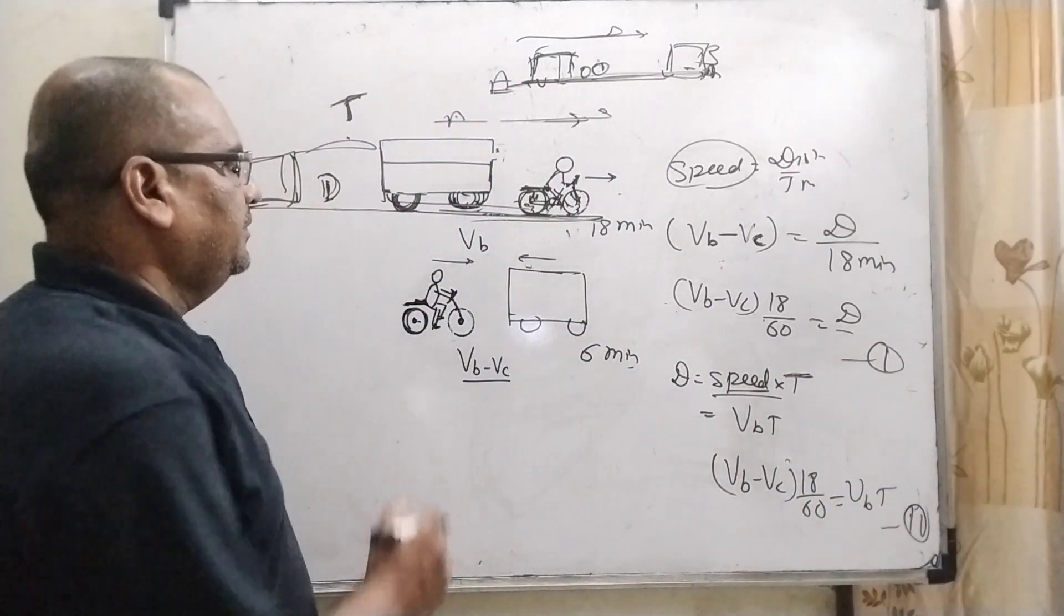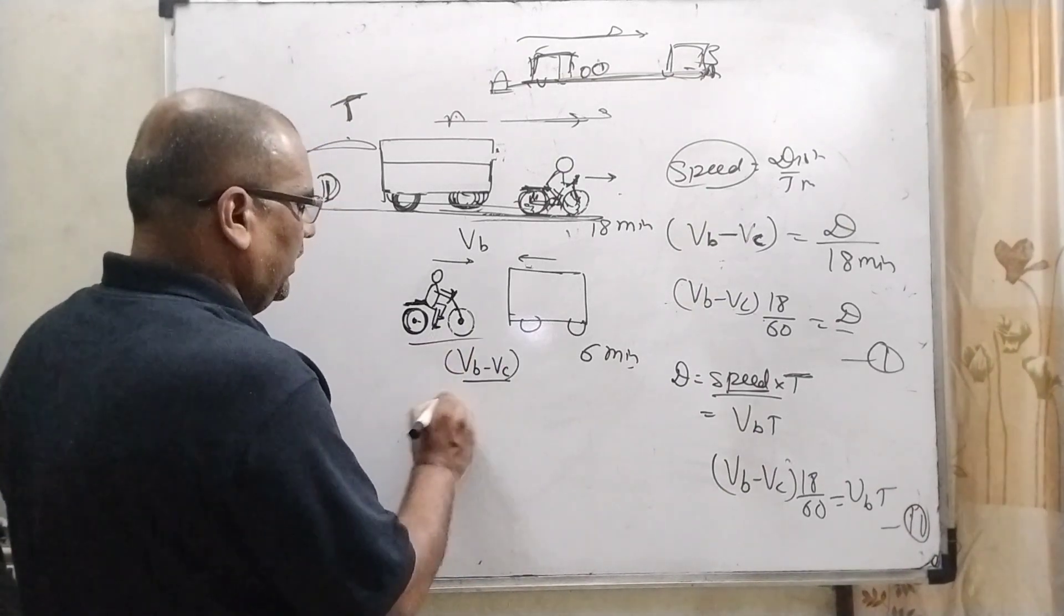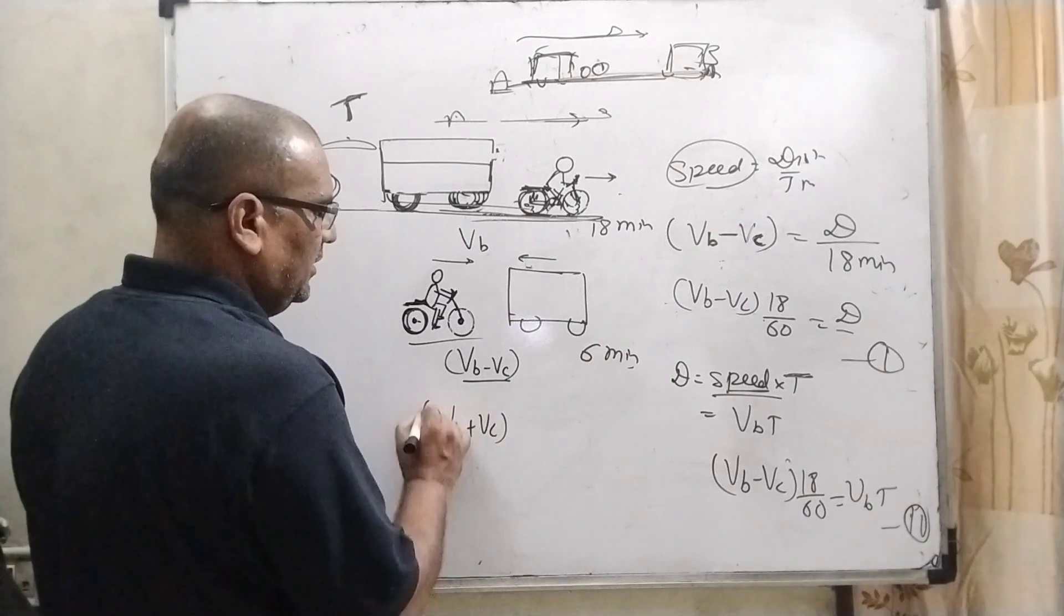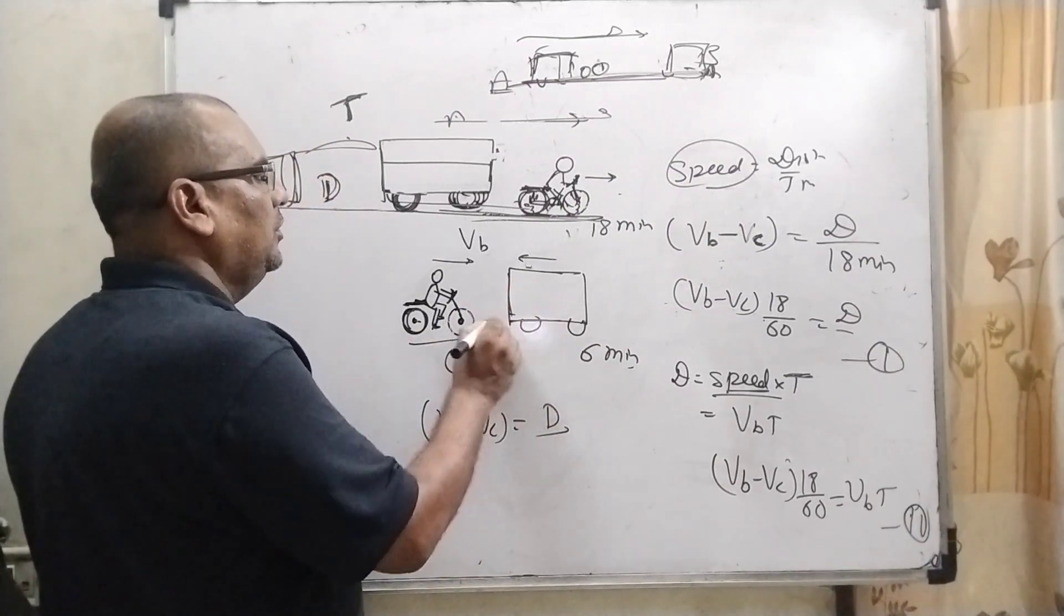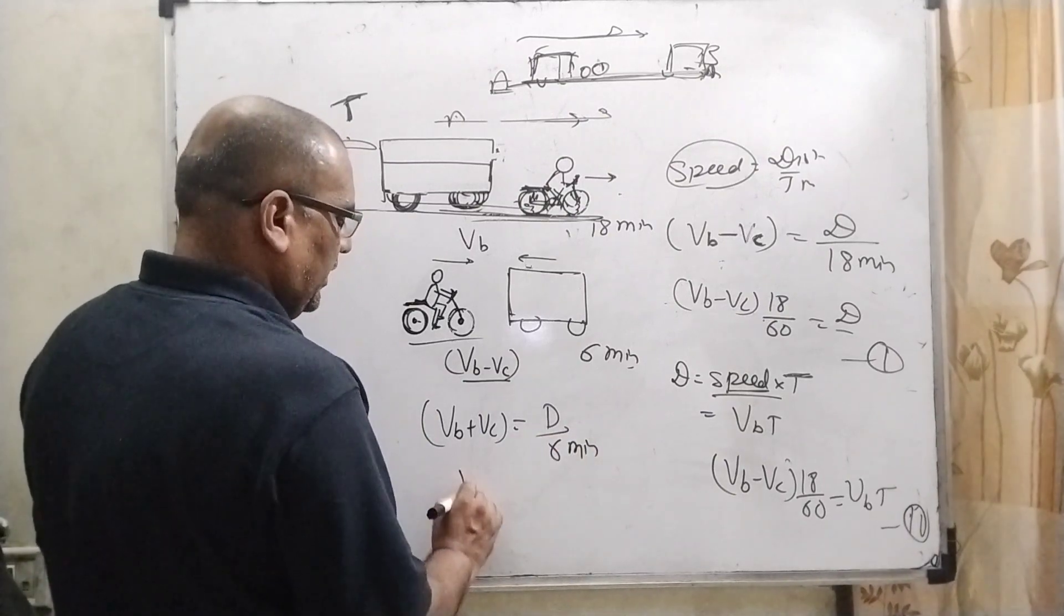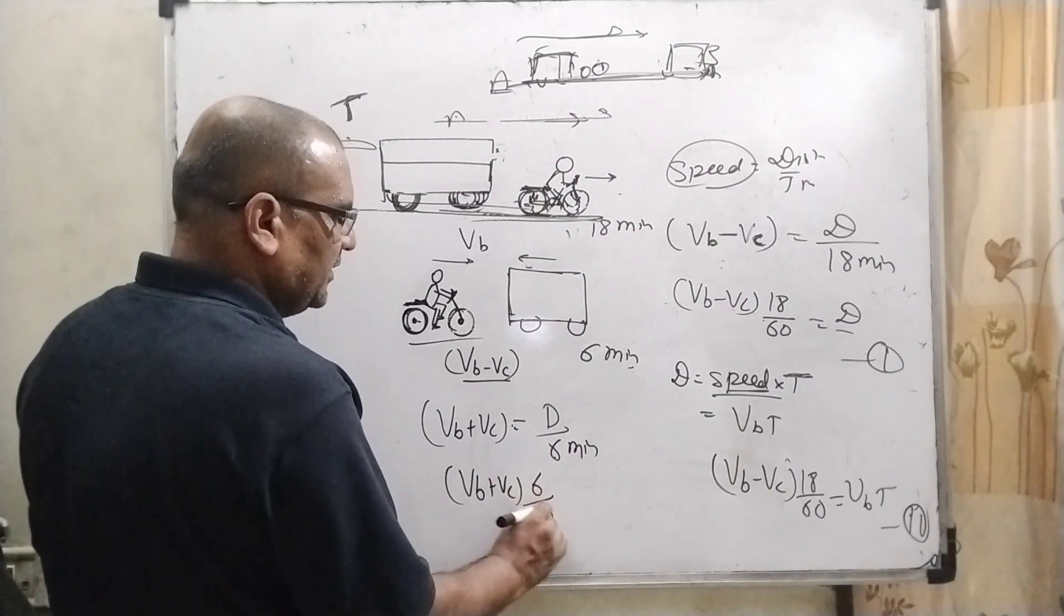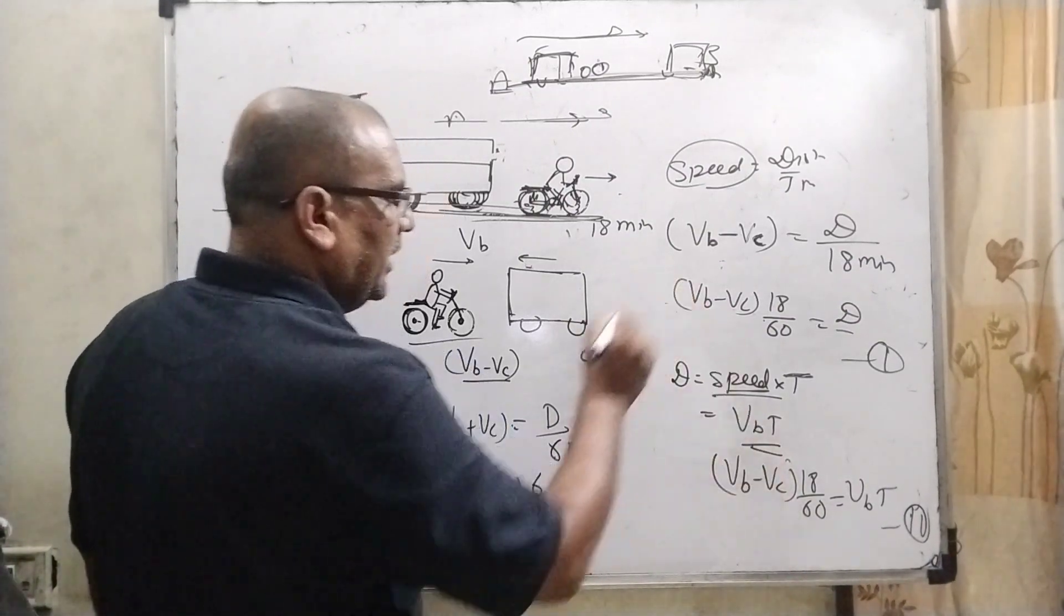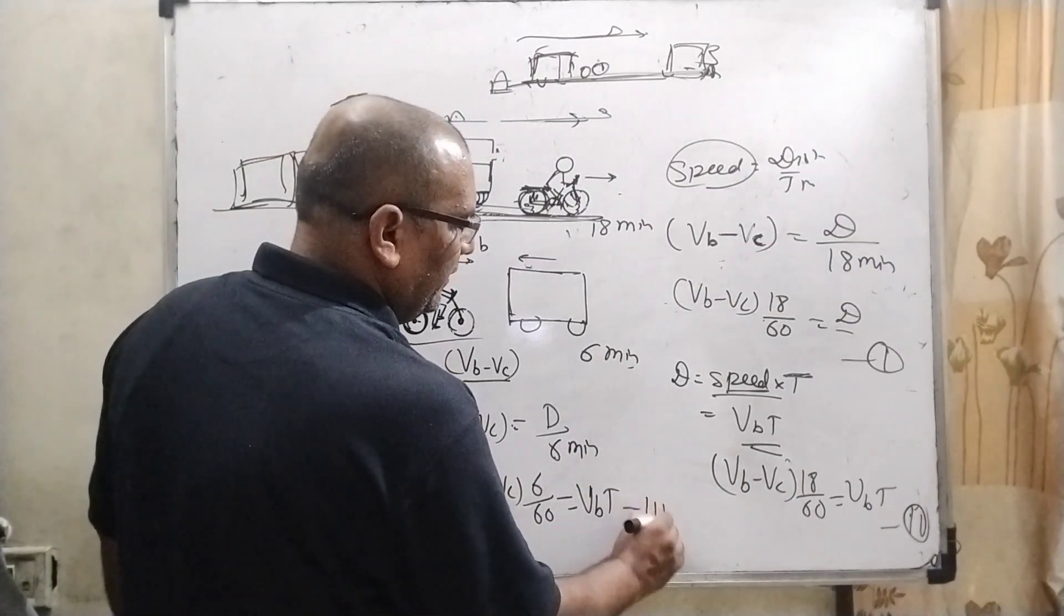Same thing applies here but in opposite direction. In opposite direction, relative velocity Vb plus Vc equals distance upon time. The time passing through in opposite direction is 6 minutes. So Vb plus Vc multiply 6 convert into hours, divided by 60 equals D, and D we have already noted that is Vb into T. It is the third equation.